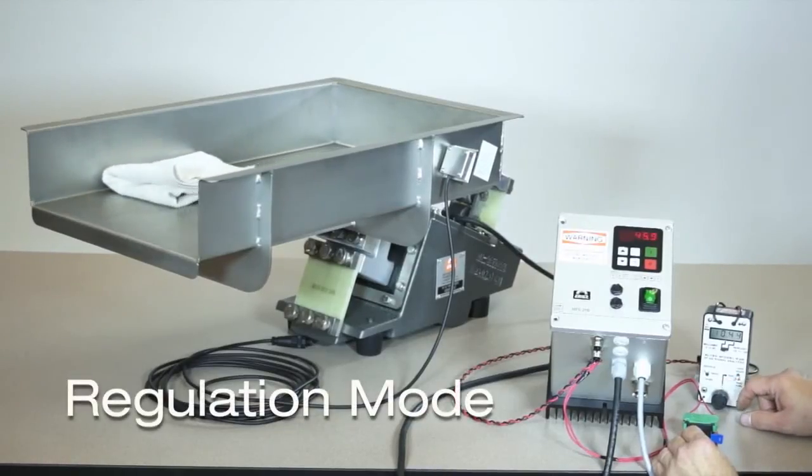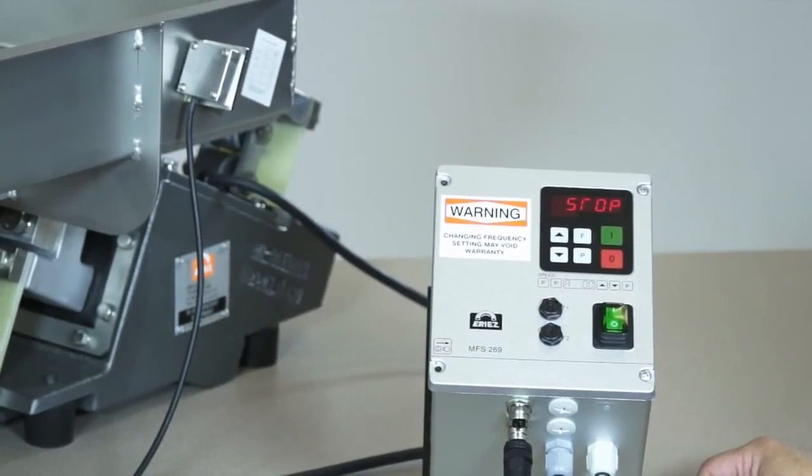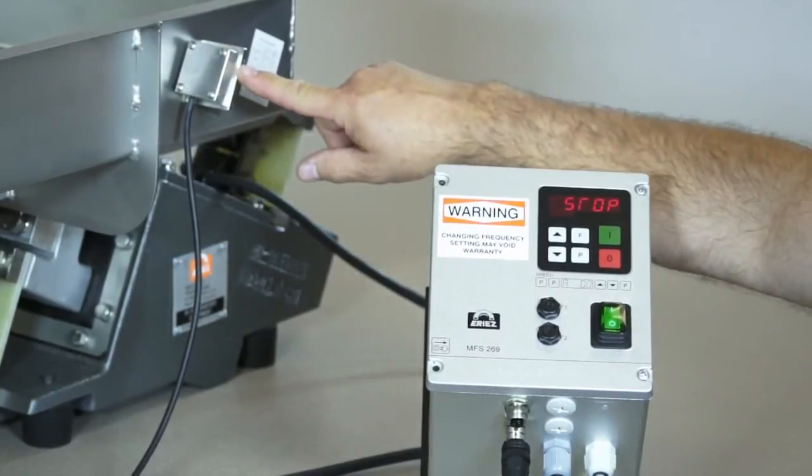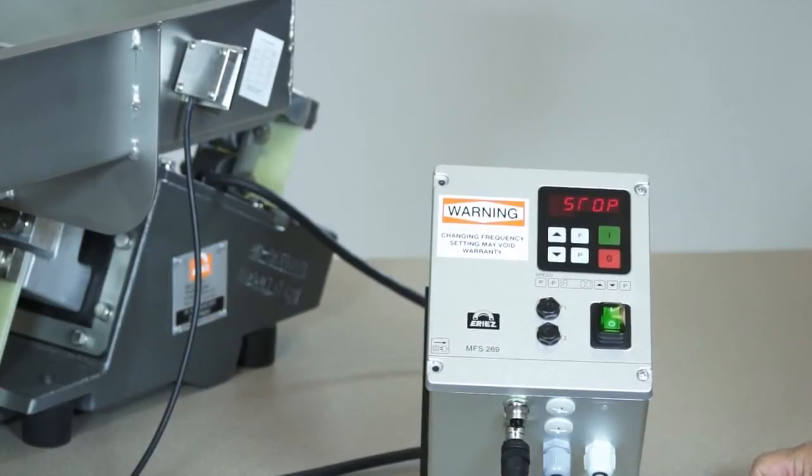Next, we will demonstrate the regulation mode. In regulation mode, a displacement sensor, called an accelerometer, is mounted on the feeder. The control uses the output of the accelerometer to keep the flow of material on the feeder tray at a consistent level.